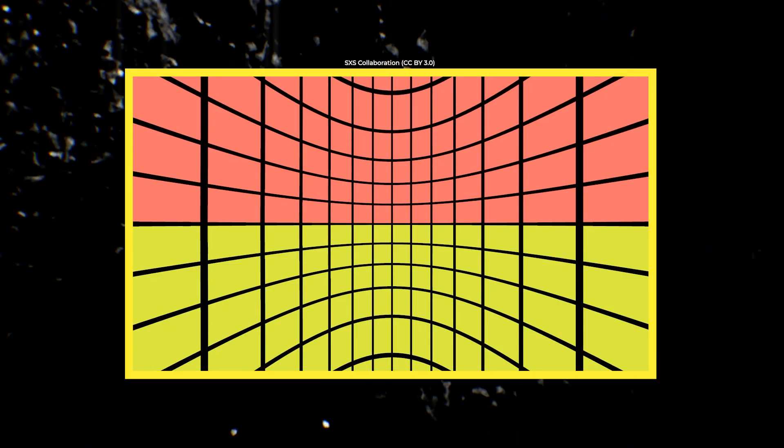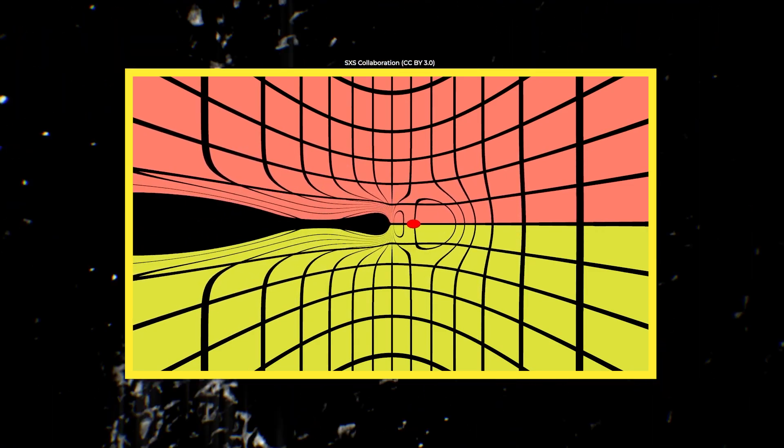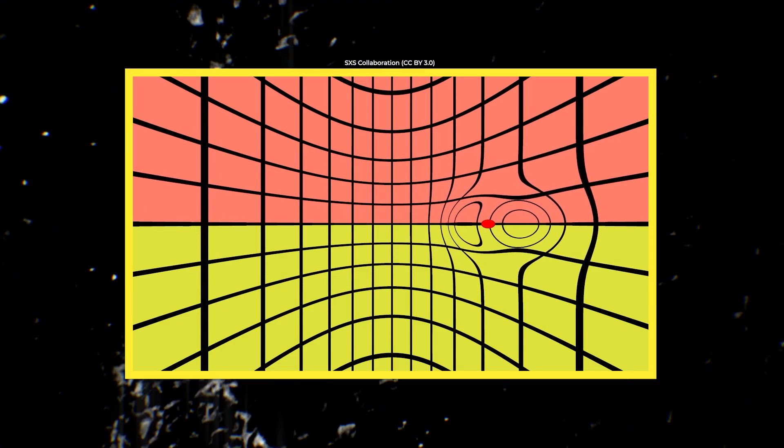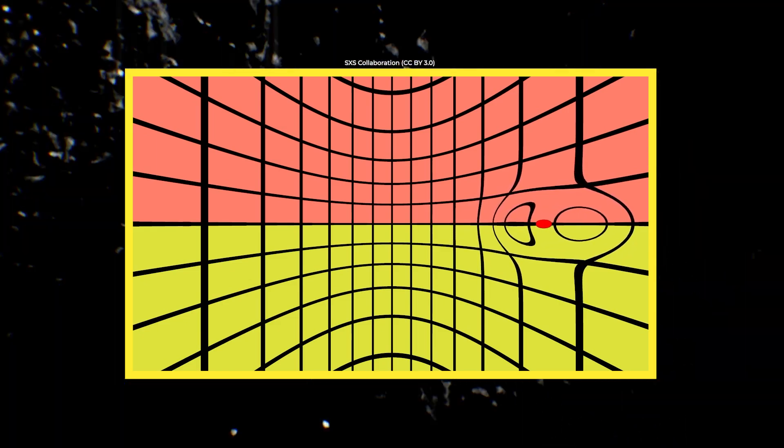However, let's say you could somehow compress the space between you and point B so that the interval is now just 1 meter. Then, moving through space-time at your maximum speed of 1 meter per second, you would be able to reach point B in about 1 second.